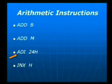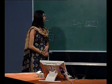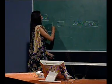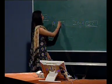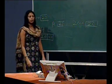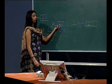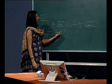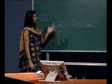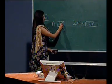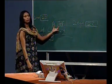The next instruction is ADI 24H. In this case, data is directly specified in the instruction, that is 24H. The 24H will be directly added with the contents of the accumulator. If the data mentioned in the instruction is 24, this 24 will be added with the contents of the accumulator, that is 20, and the result after the execution of this instruction will be 44. The contents 44 will be stored in the accumulator.